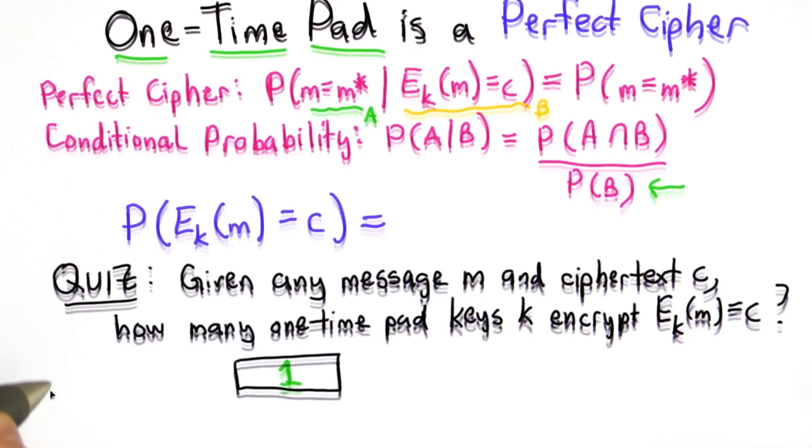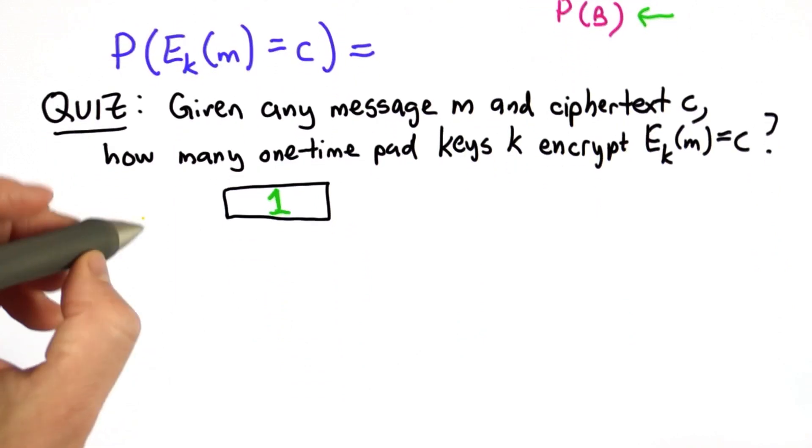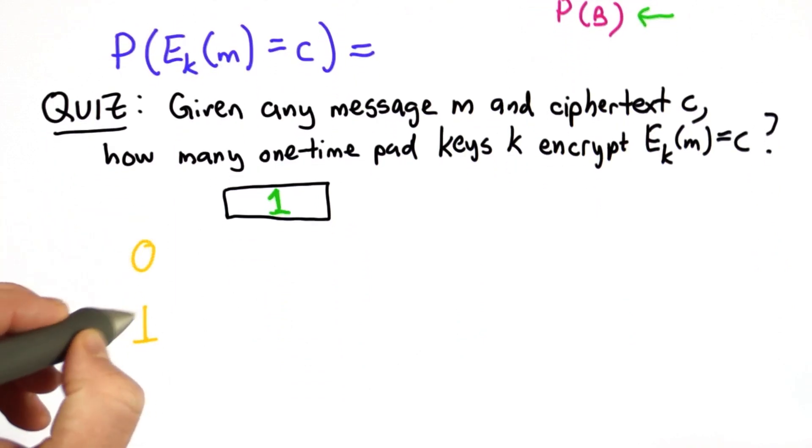We can see that thinking about the nature of the one time pad. Suppose we just have one bit messages, we have messages 0 and 1.